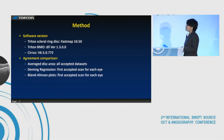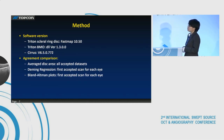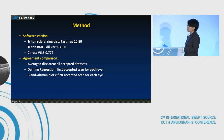Here's the list of the software versions that we used. To compare the agreement, we calculated the average disk area using all accepted datasets, and the Deming regression and Bland-Altman plots using the first accepted scan for each eye.